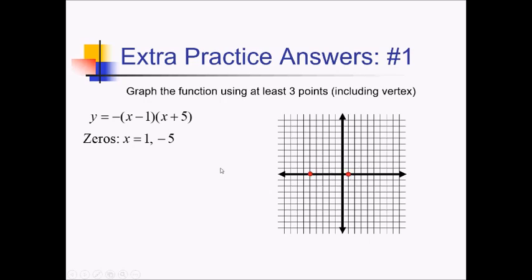We just need one more point, and it's going to be the vertex. To find that, we just average the zeros together to get the x-value of the vertex. So that's 1 plus negative 5, or 1 minus 5, over 2. That's negative 4 over 2, which is negative 2. So that's the x-value of the vertex.